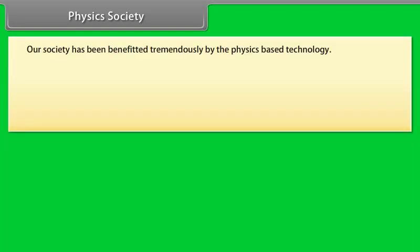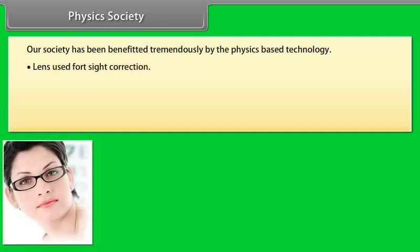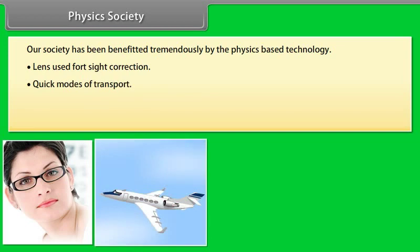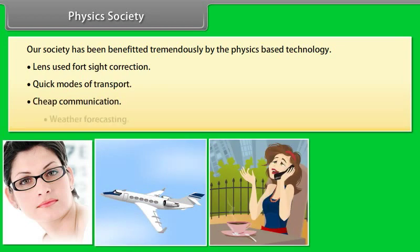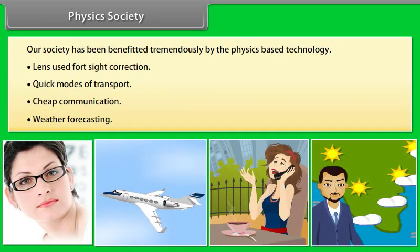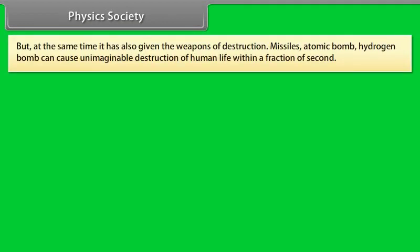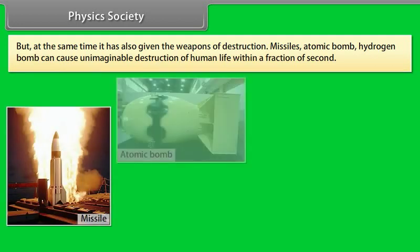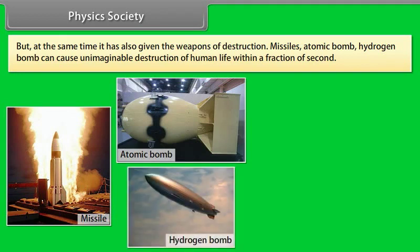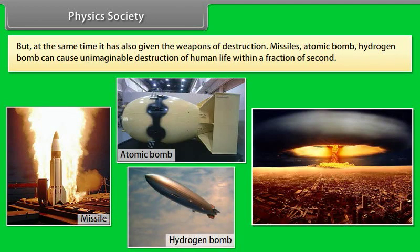Physics and society. Our society has been benefited tremendously by physics-based technology. Lens used for sight correction, quick modes of transport, cheap communication, weather forecasting are some new dimensions of progress due to physics. But at the same time, it has also given the weapons of destruction. Missiles, atomic bomb, hydrogen bomb can cause unimaginable destruction of human life within a fraction of second.